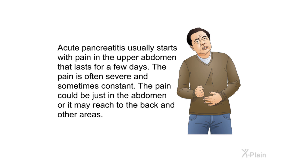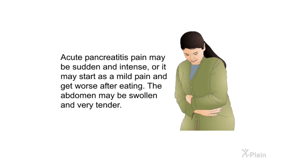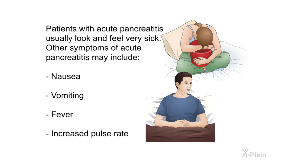Acute pancreatitis usually starts with pain in the upper abdomen that lasts for a few days. The pain is often severe and sometimes constant, and could be just in the abdomen or may reach to the back and other areas. The pain may be sudden and intense, or it may start as a mild pain and get worse after eating. The abdomen may be swollen and very tender. Patients usually look and feel very sick. Other symptoms may include nausea, vomiting, fever, and increased pulse rate.